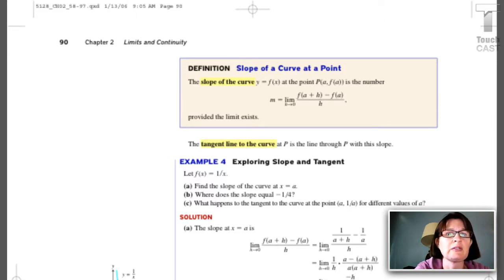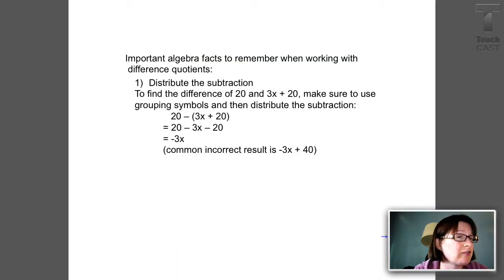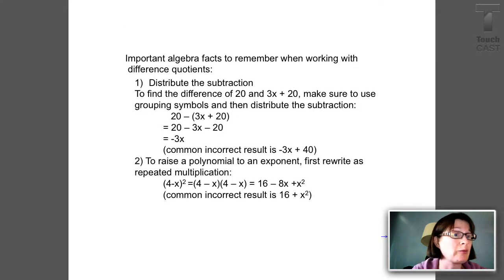So we'll review the three techniques that we've used before. Before we go on to use difference quotients, just quickly, two important algebra facts that we have to remember because they trip calculus students up. The first one is to remember to distribute the subtraction. So notice in the numerator we've always got a subtraction problem. Make sure that whatever you're trying to subtract, whatever comes after the subtraction sign, gets parentheses and then the subtraction gets distributed. And the second one is, we spend a lot of time using polynomial functions in calculus. Make sure if you need to raise a polynomial to an exponent, first rewrite it as repeated multiplication. So if you want to square a binomial, make sure you write the binomial twice and then if FOIL is what you remember, use FOIL. But notice that four minus x squared takes four multiplications.